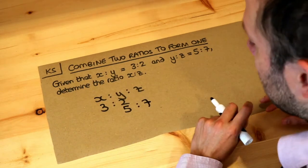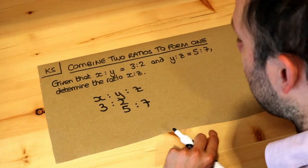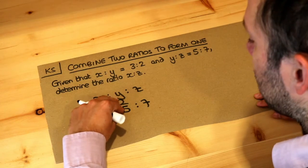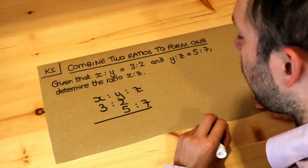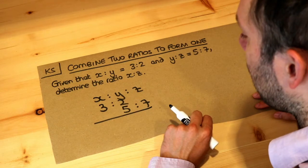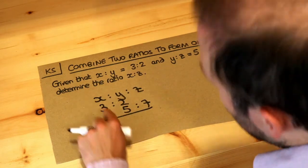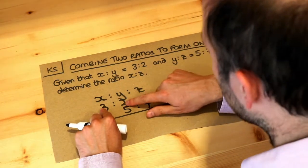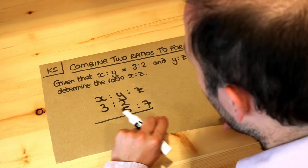Now in order to combine these into a single ratio, we need those y parts to match. Remember, we can change a ratio by just scaling the numbers by whatever we like, just like with a fraction. So we could times this 3 by 2 and times the 2 by 2, or we can times them both by 4, whatever we like.